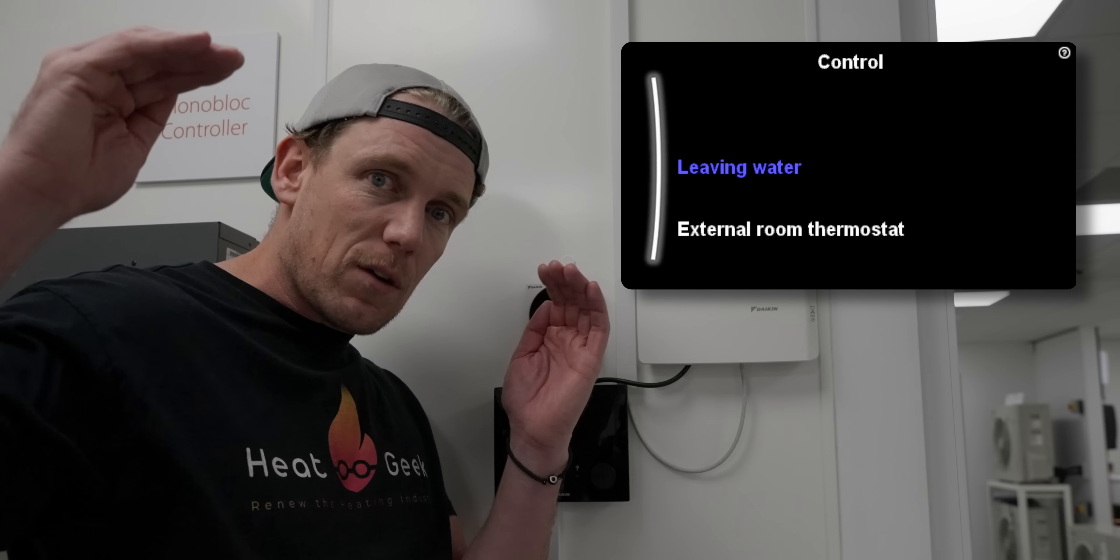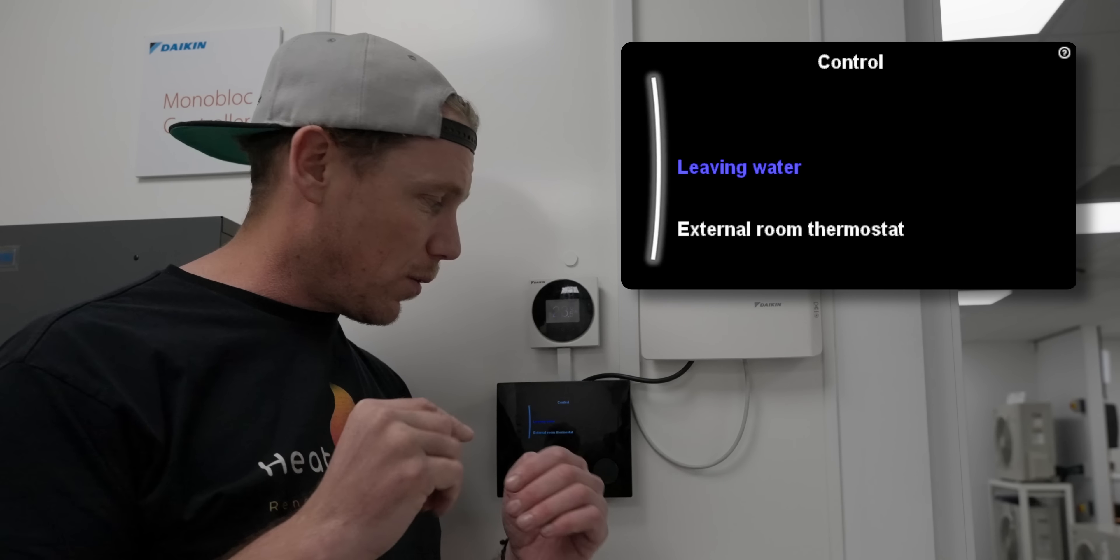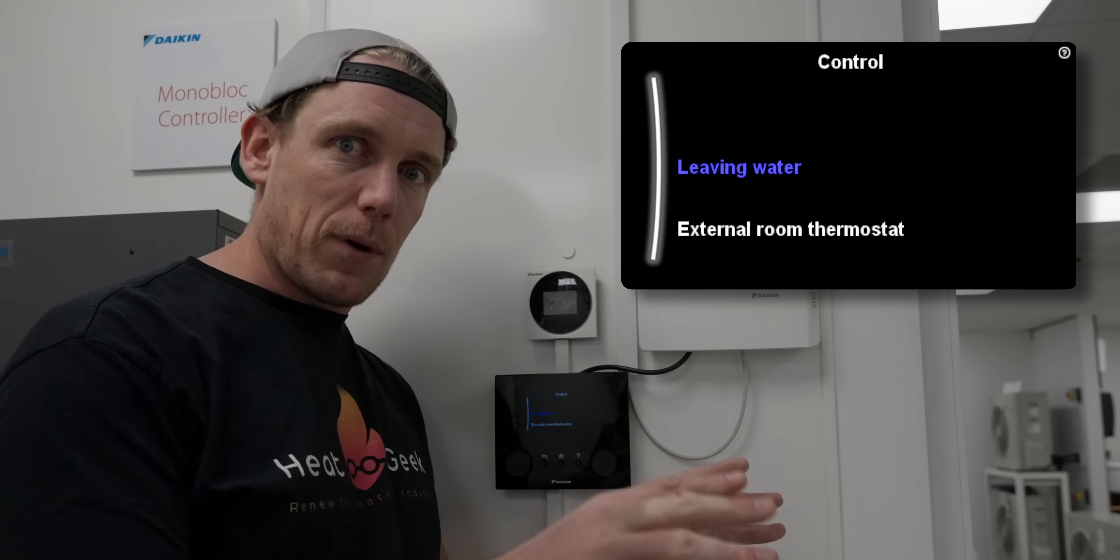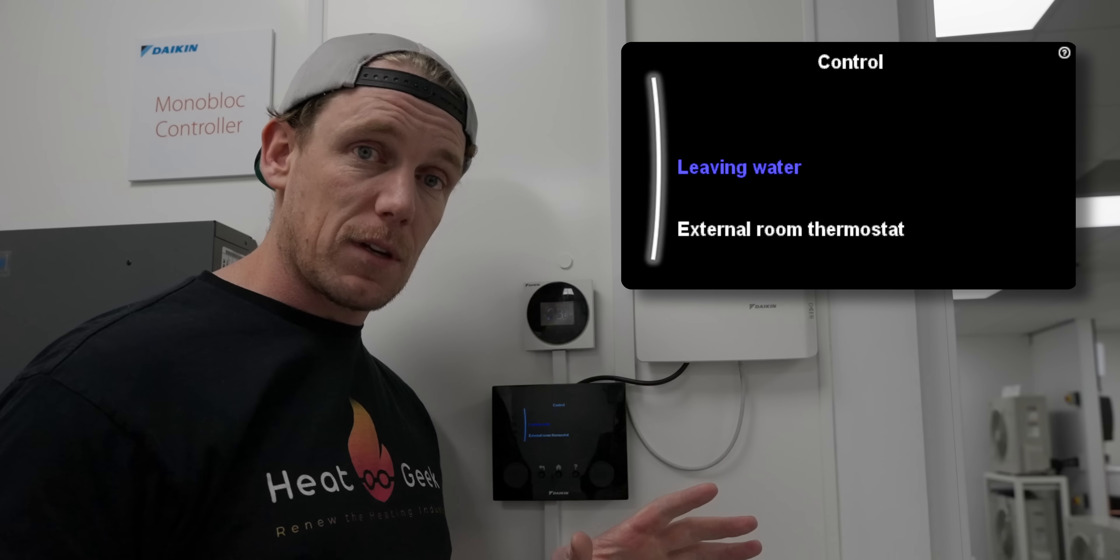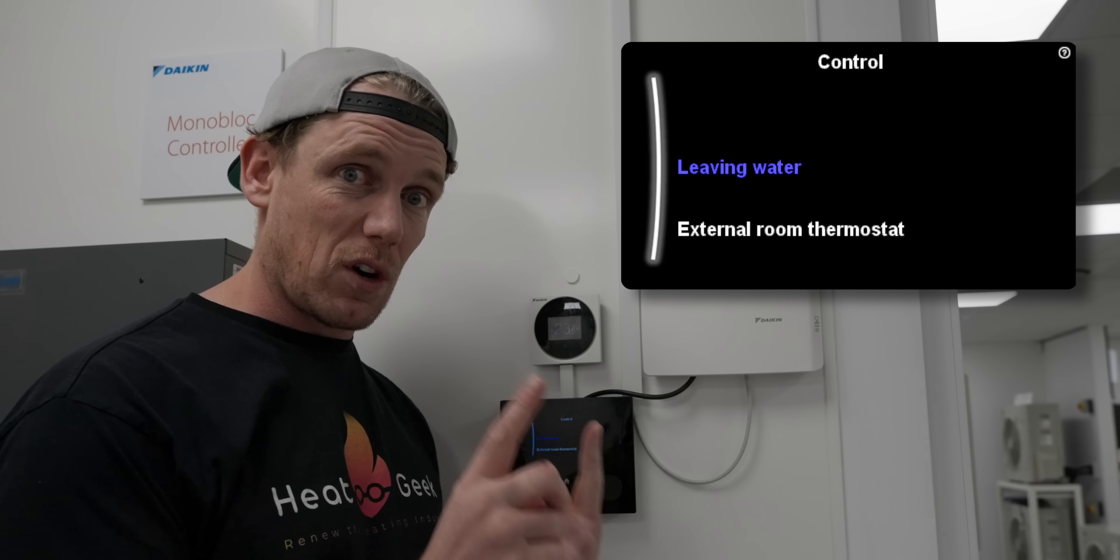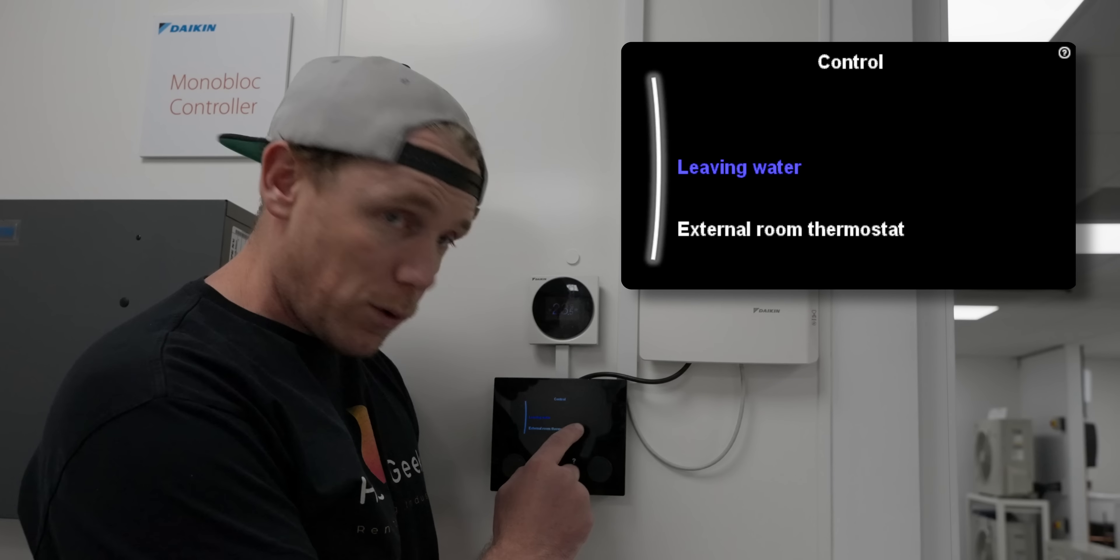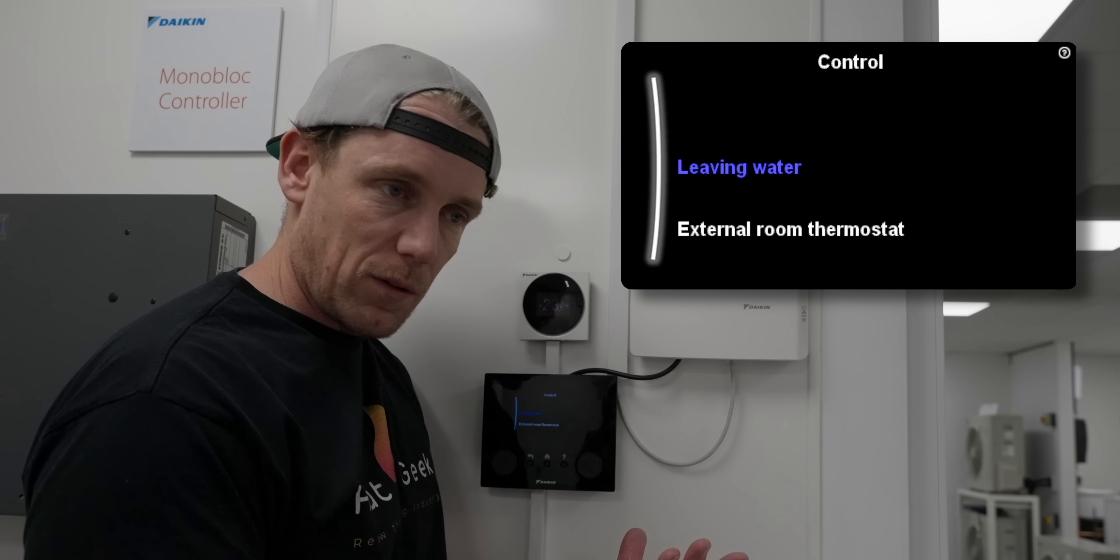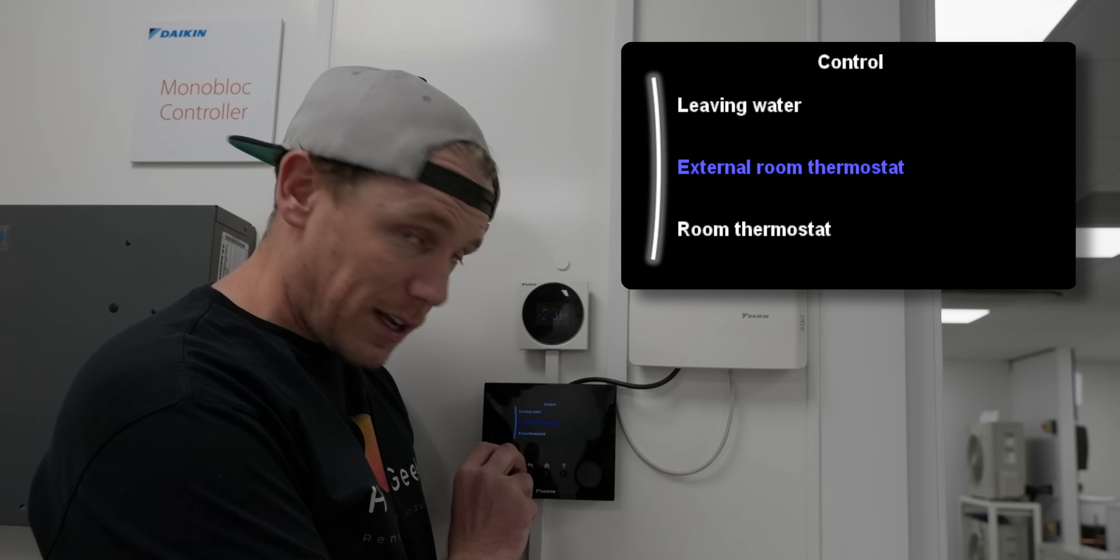Get it as comfortable as possible, then you can bring in your external controls so they close down the actuators as little as often and let the heat pump pump around as much of the system continually as possible. That's going to drive up your efficiency. So leaving water is pure weather compensation, like we refer to in our video, but all manufacturers have their own terms. External room thermostat is on-off, and room thermostat is a modulating room thermostat like we've got here.